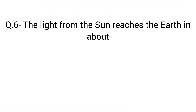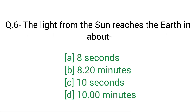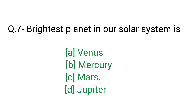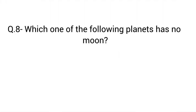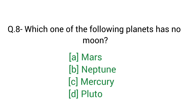Question number 6: The light from the sun reaches the Earth in about? Right answer B — 8.20 minutes. Question number 7: The brightest planet in our solar system is? Right answer A — Venus. Question number 8: Which one of the following planets has no moon? Right answer C — Mercury.